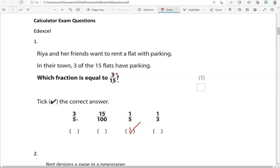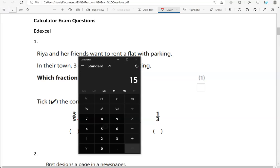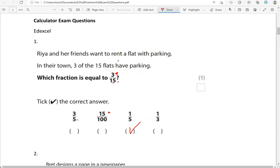Let's have a look at the second one, just to rule out any other option that might be correct. The top number has been multiplied by five. Three times five to get 15. But 15 times five, does that give us 100? It doesn't. It's 75. So the second option is not correct. What about the final one? To get from three to one, we divide by three. So if we divide 15 by three, we get five. So that's not correct either. So the only correct option is one-fifth.